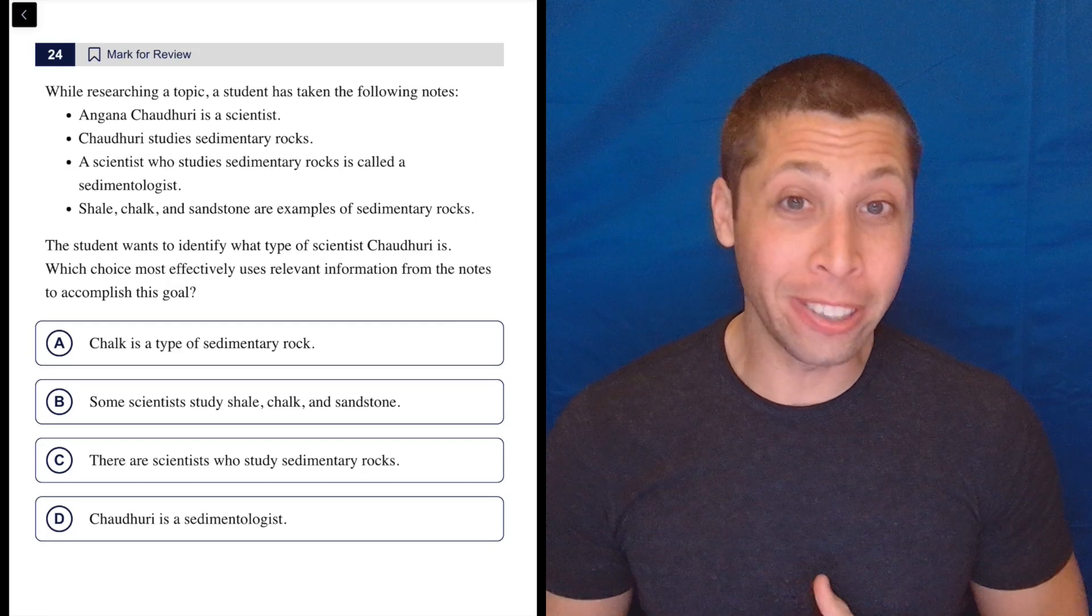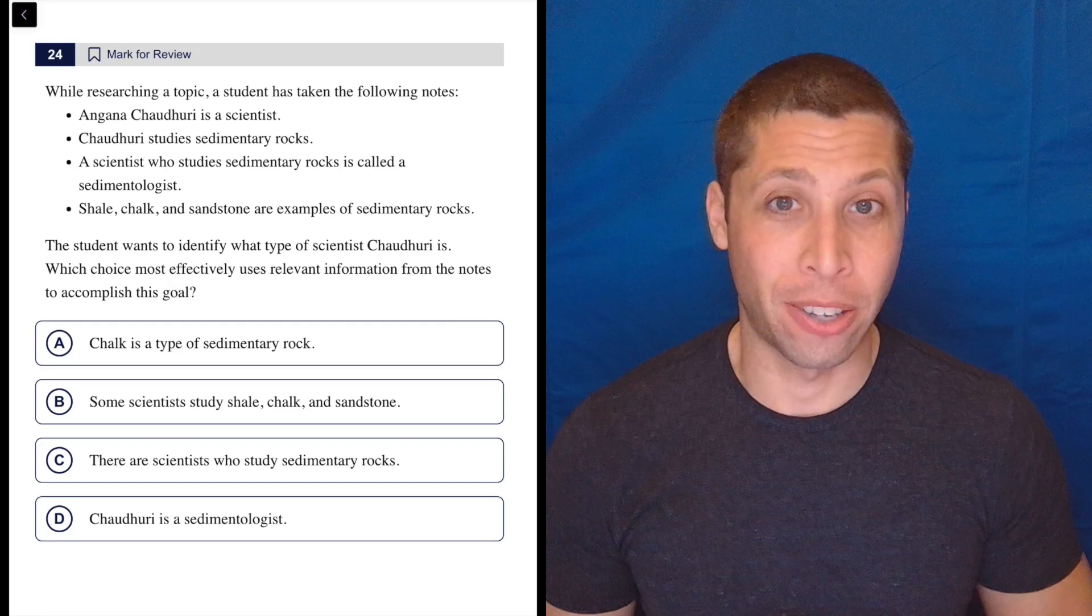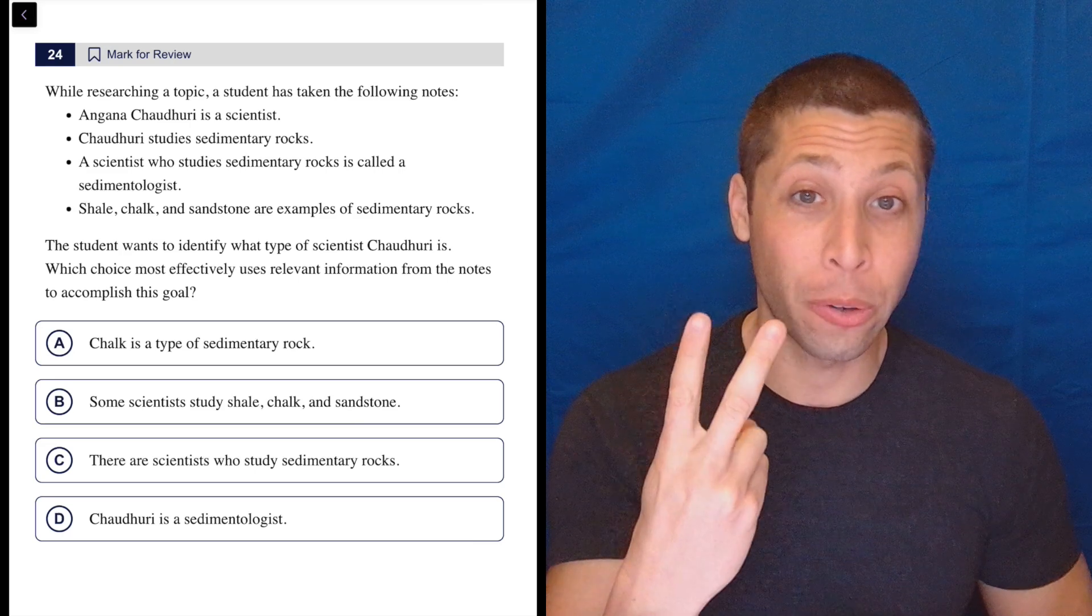Now, number 24 is kind of early for us to start seeing these outline questions, right? That means we're going to get four of them: 24, 25, 26, 27.